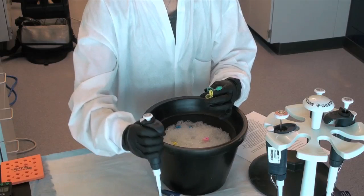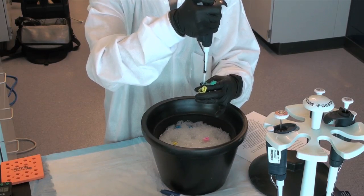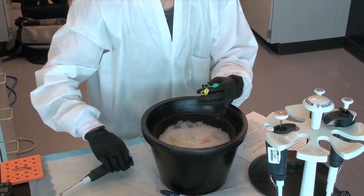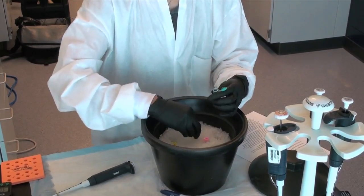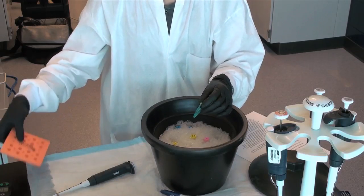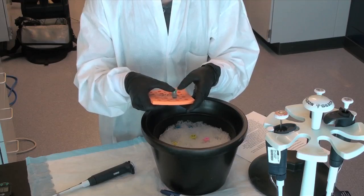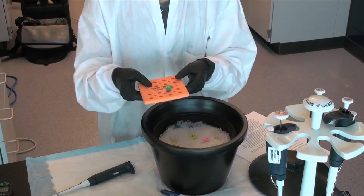Step 5: To dephosphorylate the vector, we will use the enzyme antarctic phosphatase, which will prevent the vector from recirculating without any insert. To do this, we will add to the vector tube 5 microliters of 10x antarctic phosphatase buffer, 4 microliters of water, and 1 microliter of antarctic phosphatase.